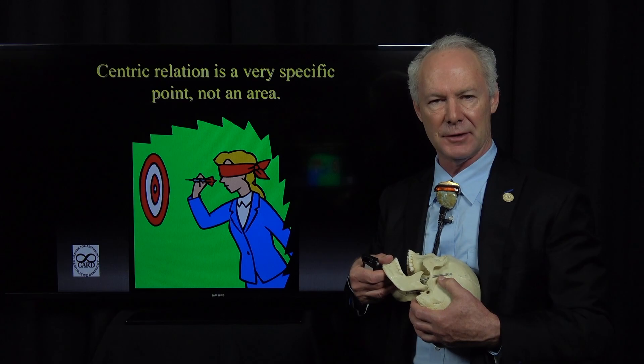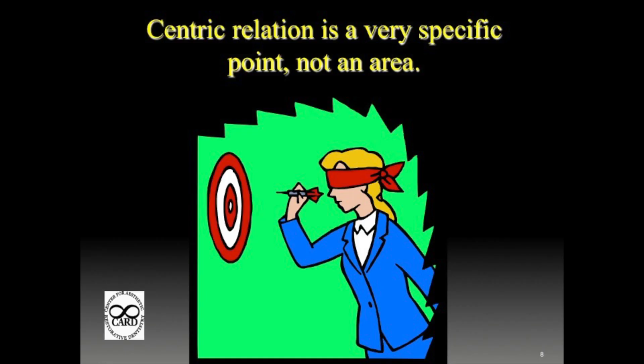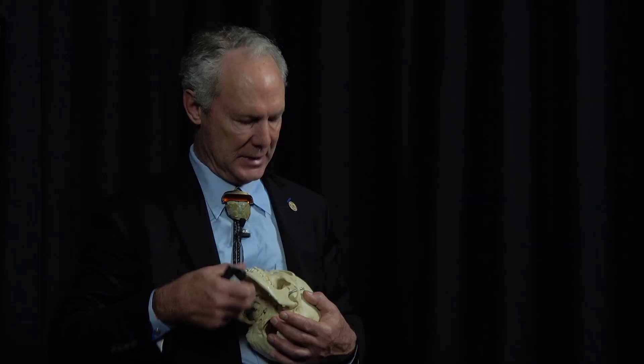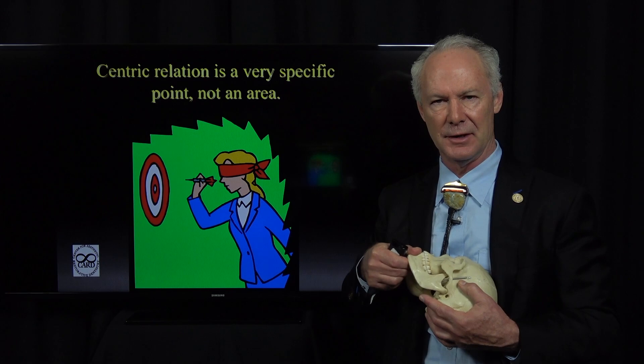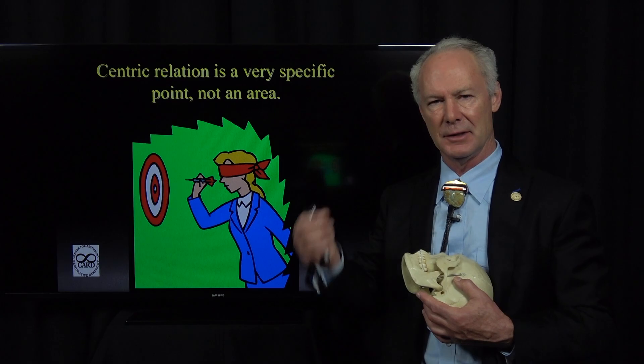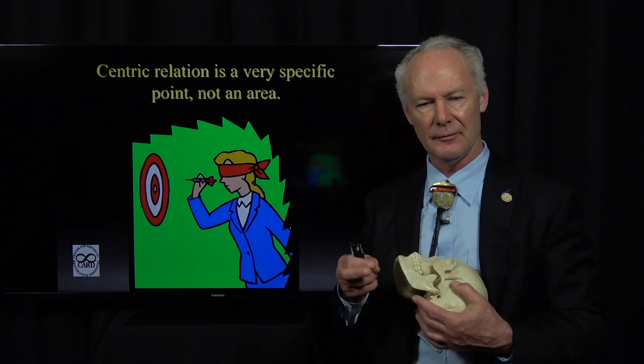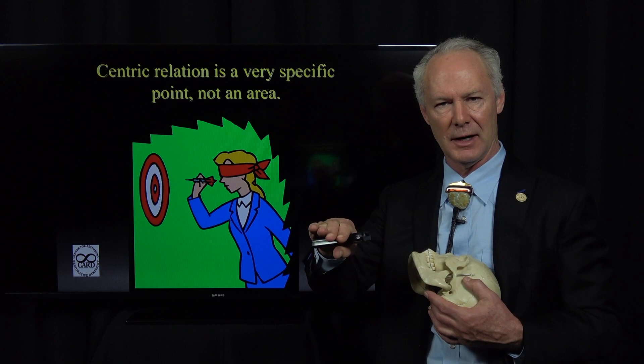Centric relation is not an area, it's a dot. If you have multiple dentists that understand how to manipulate into centric relation, every one of them will manipulate into the exact same position. So it's a dot — it's not a range, it's a dot. And you can come back to it time and time again. That's one of the reasons it's a fundamental for complex restoration.